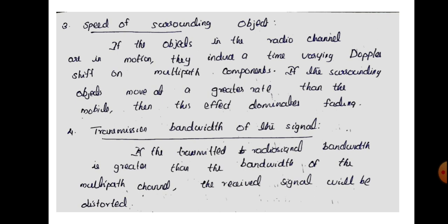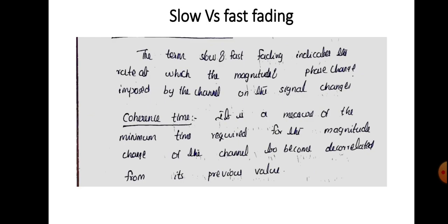Next is the transmission bandwidth of the signal, which also affects fading. If the transmitted radio signal bandwidth is greater than the bandwidth of the multipath channel, then the received signal will be distorted. There is a relationship between the bandwidth of the channel and the bandwidth of the signal. We can also see slow and fast fading, as well as frequency selective fading.